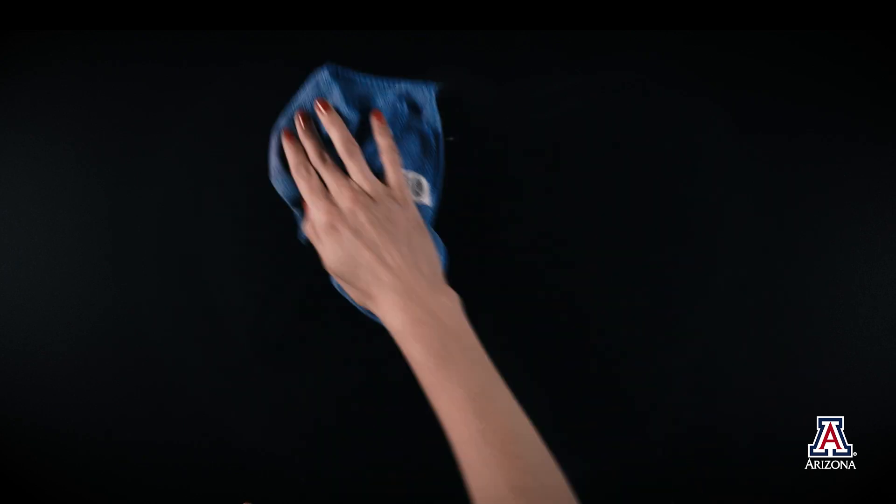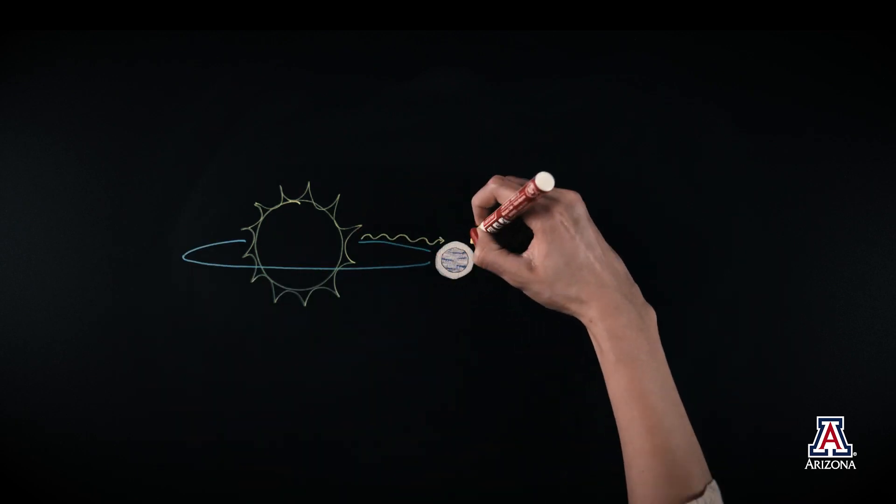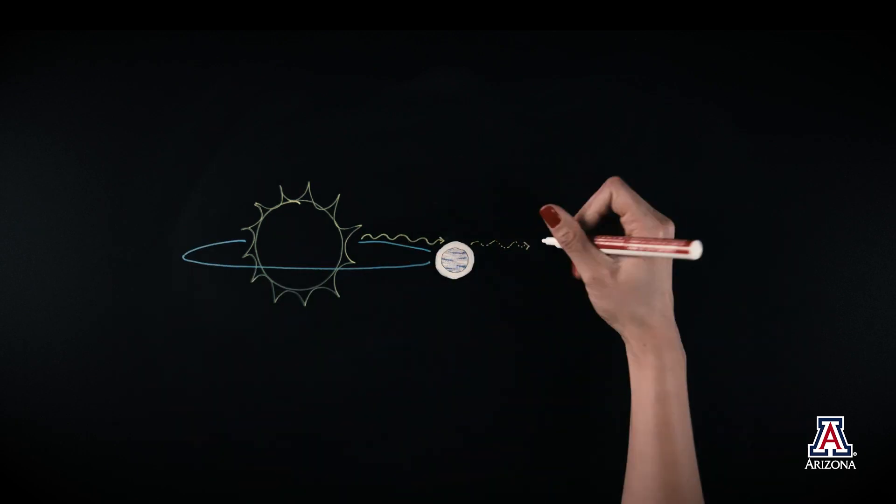Webb will also peer into the atmospheres of exoplanets, which orbit other stars. When a planet passes in front of its parent star, starlight filters through the planet's atmosphere.